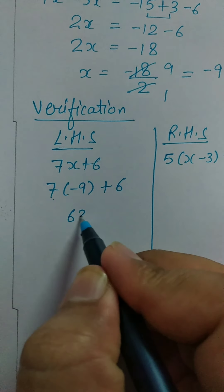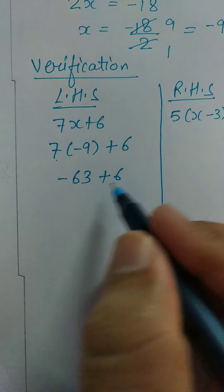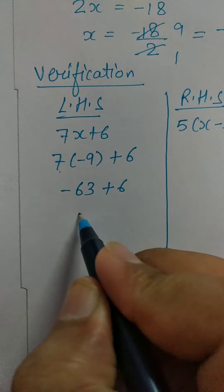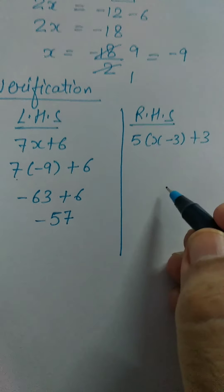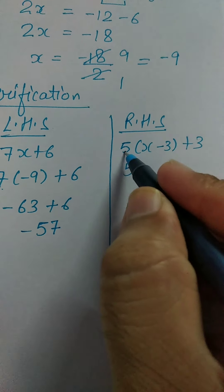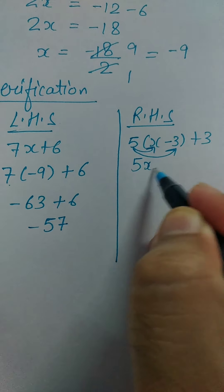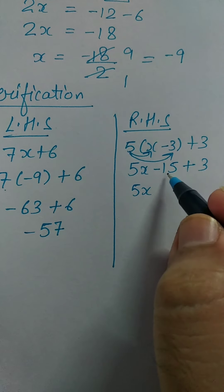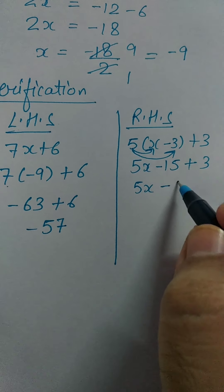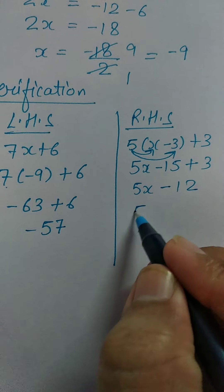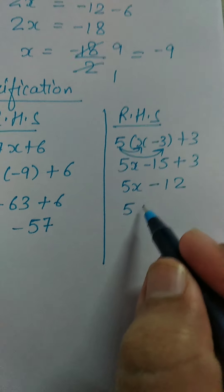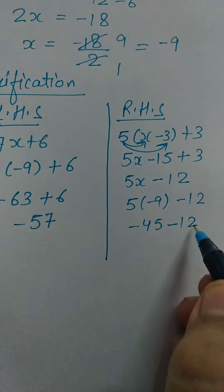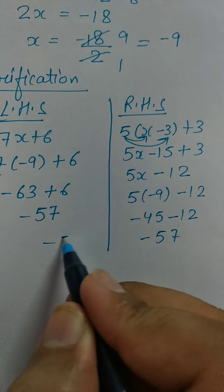7 nines are 63. Minus 63 plus 6 — minus 63 plus 6 gives minus 57. Now solve RHS. Open the bracket: 5X minus 15, then 5 through the minus 3 is 15, plus 3. So 5X minus 15 plus 3, which equals 5X minus 12. Put the value of X — X is minus 9. 5 nines are 45. Minus 45 minus 12 is equal to minus 57. Here also minus 57.